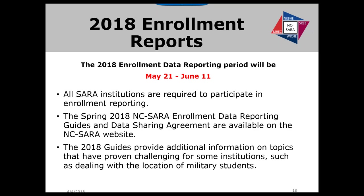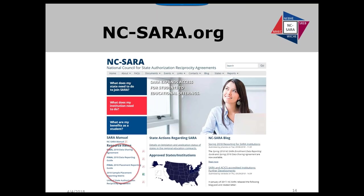The guides are available on the website as well as the data sharing agreement, and you can see exactly where they are located on the website. Also on the website is a sample placement reporting matrix that we'll talk about in the second half of today's conversation. You can also find the 2017 reporting documents and enrollment reports under the Documents section at the top of the website page.